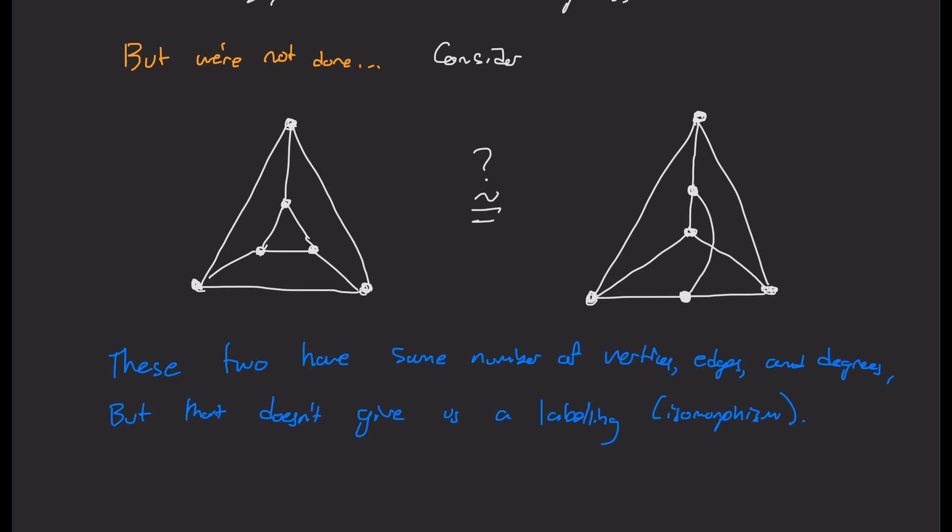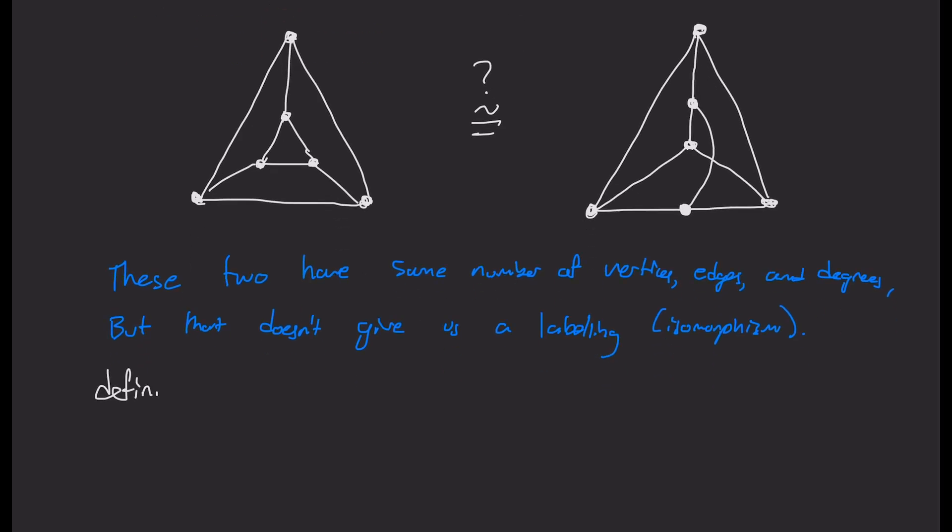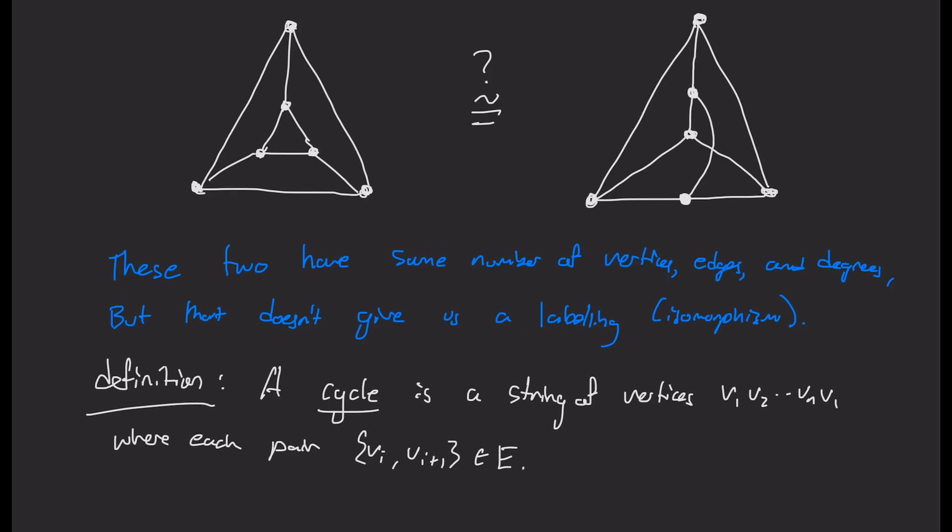So while you ponder that, I want to give another definition. I'm going to define a cycle to be a string of vertices, let's say v1, v2, all the way up to vn, back to v1, where each pair vi to vi plus one is an edge. So in other words, they're a connected string of vertices that gets us back to where we started.